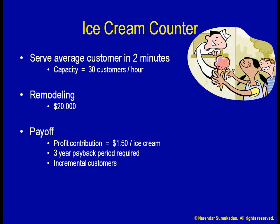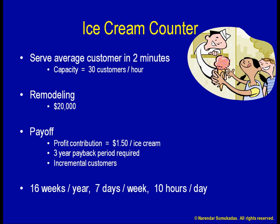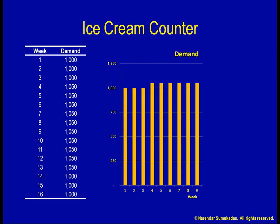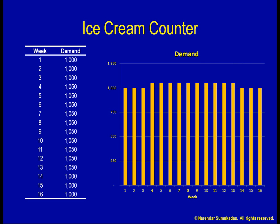I collect some data on the ice cream sales. I want to estimate how many potential customers I am turning away due to my current capacity limitations. By expanding, I can then convert these potential customers into actual customers. The counter is open for 16 weeks every year, 7 days a week, 10 hours a day. During these 4 months, the flow of customers fluctuates slightly from week to week, as shown. The highest demand in any week is 1,050. Meanwhile, my current capacity is 30 customers per hour, or 300 customers per day, or 2,100 customers per week.